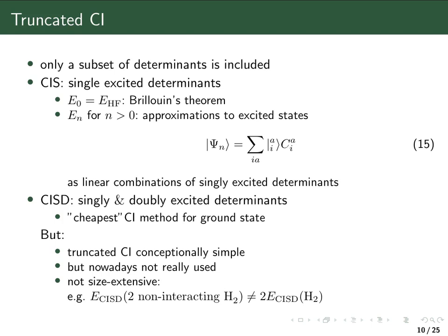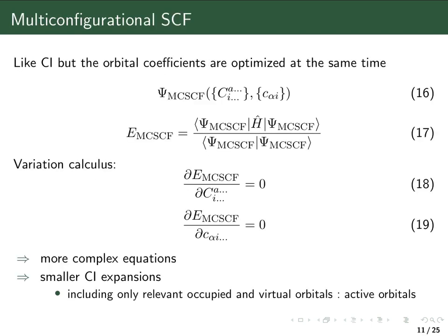There are ways to approximately repair this size-extensivity problem in configuration-interaction calculations, but nowadays people prefer methods that do not have this problem at all. One important method is multi-configurational self-consistent field (MCSCF). In a way, it is an extension of Hartree-Fock from one Slater determinant to more Slater determinants, or equivalently, it is configuration-interaction where the orbitals are also optimized simultaneously.